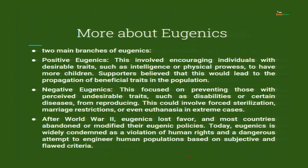There are two main branches of eugenics — and we need to know about our enemy in order to remain cautious not to promote it. Positive eugenics involved encouraging individuals with desirable traits such as intelligence or physical prowess to have more children, believing this would propagate beneficial traits. Those with very good intelligence, physical build, and no hereditary or genetic diseases were asked by the government to produce more children even if they didn't want to.